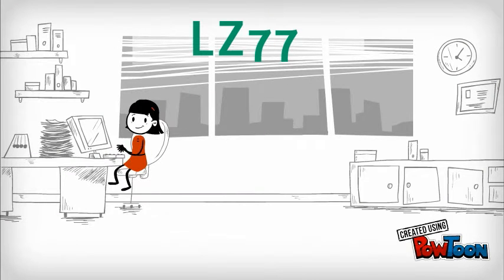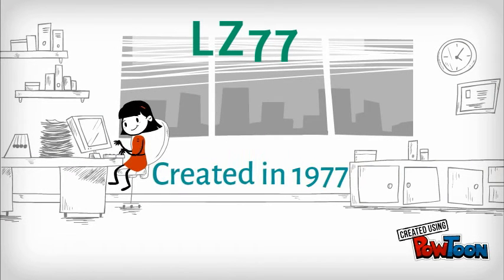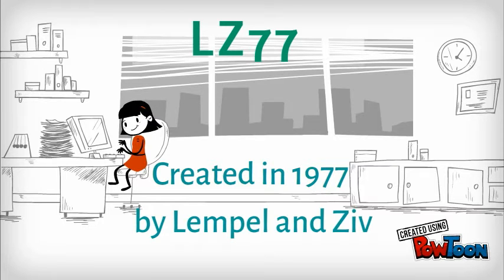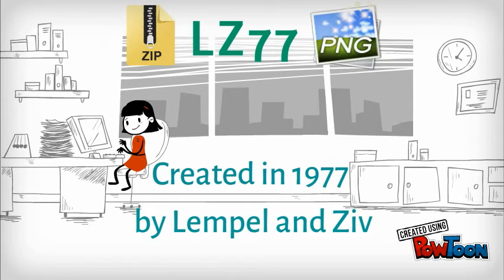The LZ77 algorithm was created in 1977 by Lempel and Ziv, and is still used in popular file formats like Zip and PNG.